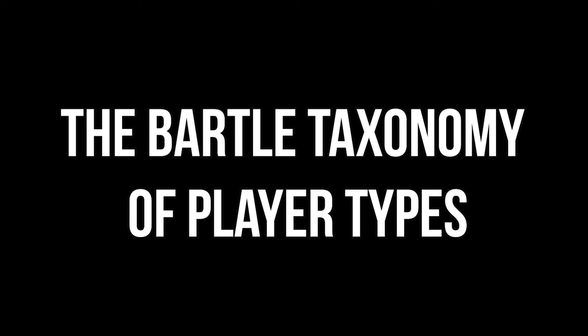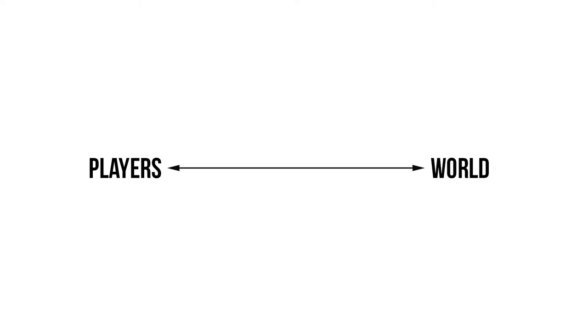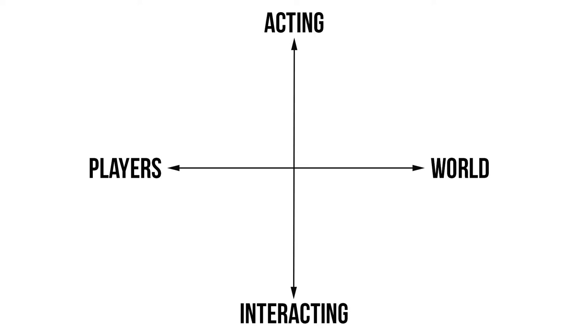In 1996, game researcher Richard Bartle attempted to answer these questions, and he developed what became known as the Bartle taxonomy of player types. He drew a diagram where the x-axis represented a preference for interacting with players or the game world. Meanwhile on the y-axis, this represented a preference for interaction vs. unilateral action — or more simply, acting upon something. Based on this diagram, he divided players into four types.